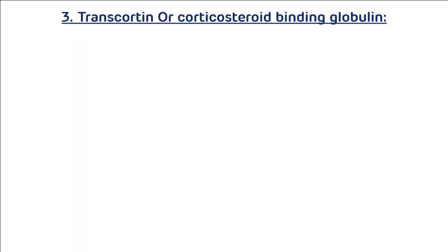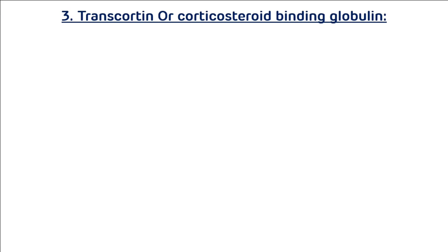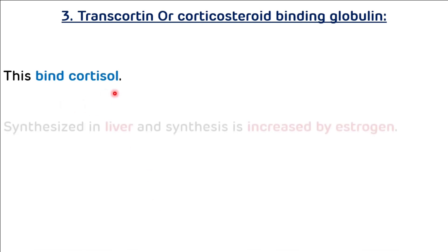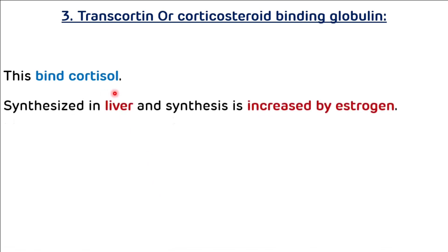Third is transcortin, also known as corticosteroid binding globulin. As the name suggests, it binds cortisol. It is synthesized in the liver and its synthesis is increased by estrogen.